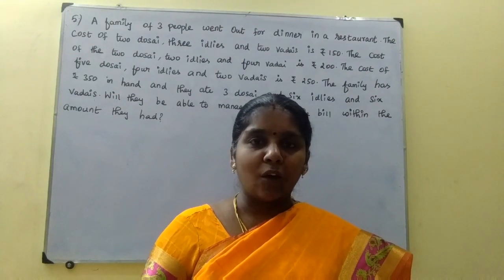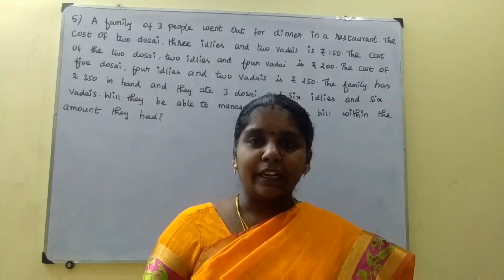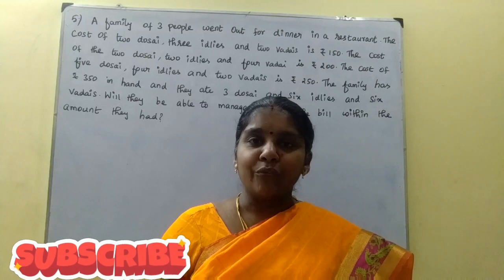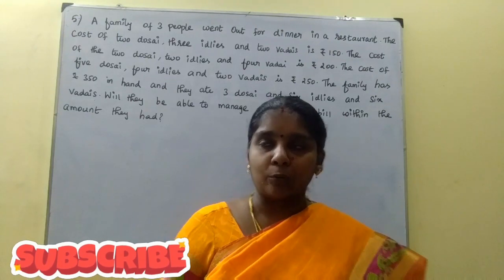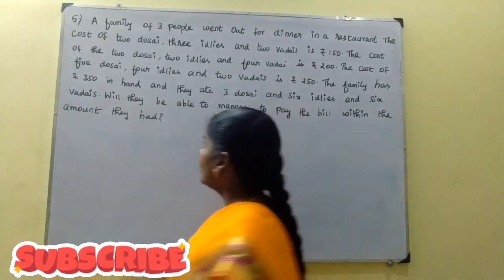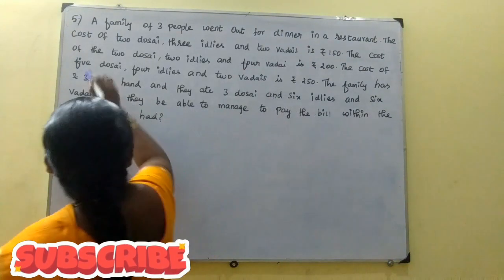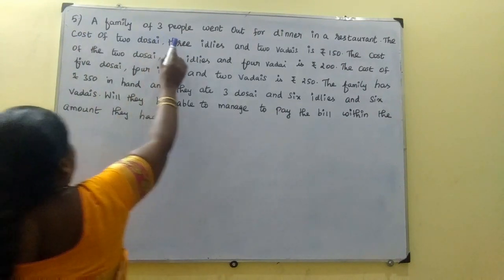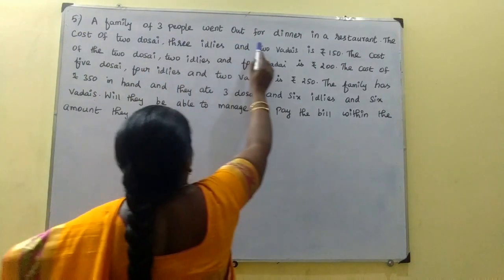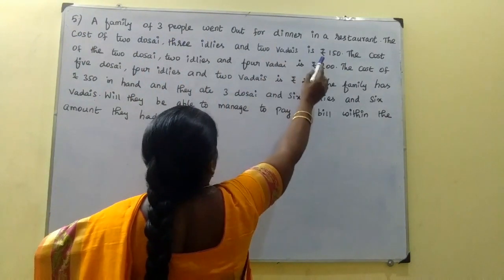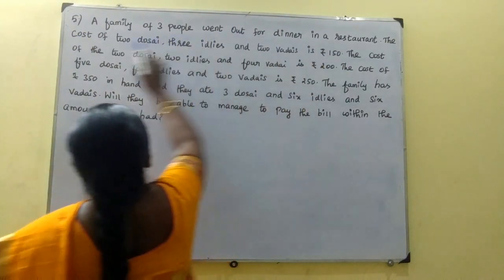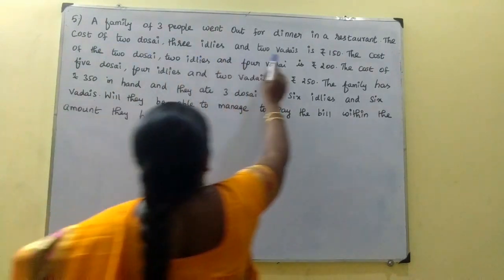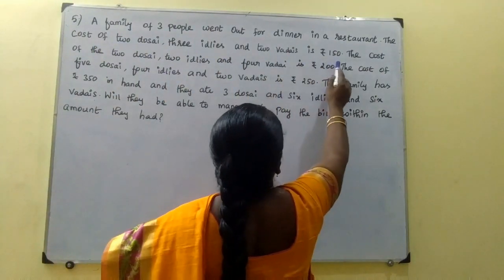Welcome students! I am going to get started. I am going to do exercise 1.4. A family of 3 people go out for dinner at a restaurant. The cost of 2 dosas, 3 idlis and 2 vadas is Rs. 150.